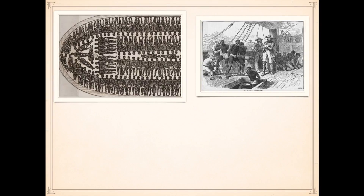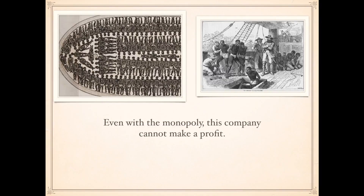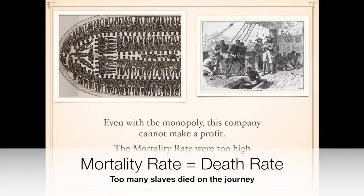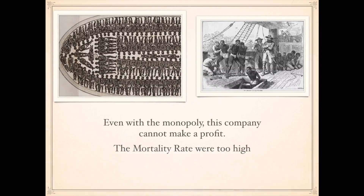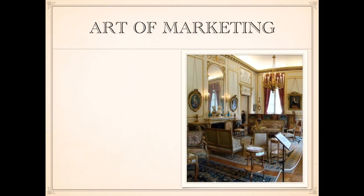What did this company do? They were involved in many things, including slave trading — bringing African slaves from one place to sell in another. But even with a monopoly granted by the UK government, this company could not make a profit. The mortality rate was just too high. Yet how did they manage to make the share price go up? They used marketing.